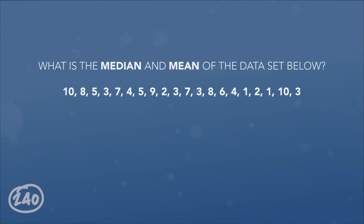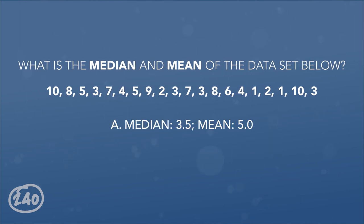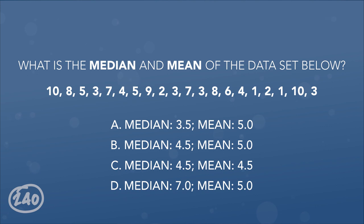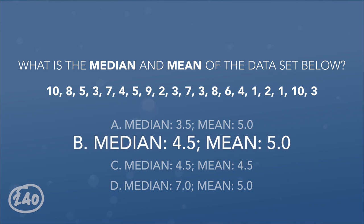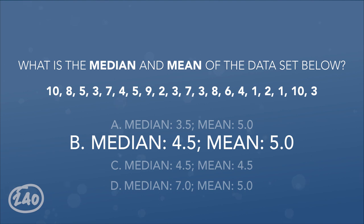Question 5 deals with central tendency measurement: What is the median and mean of the data set shown? A) median 3.5, mean 5; B) median 4.5, mean 5; C) median 4.5, mean 4.5; D) median 7, mean 5. The correct answer is B. Order the data first, then find the median — with 20 terms, the middle two are 4 and 5, so the median is 4.5. The mean is the sum of all numbers (101) divided by 20, which equals 5.05, rounded to 5.0.